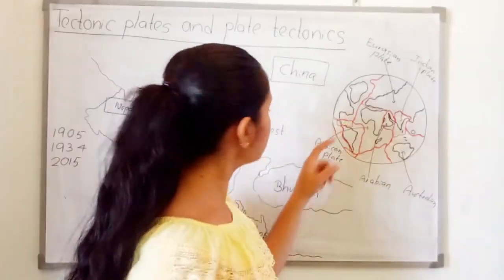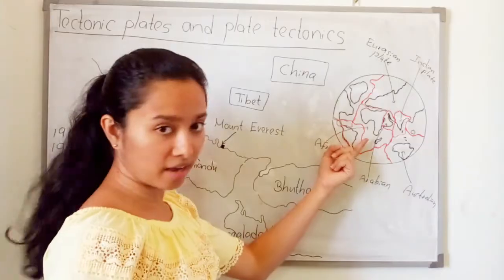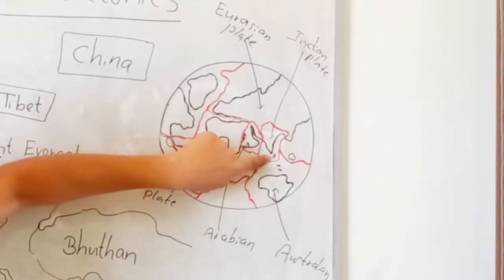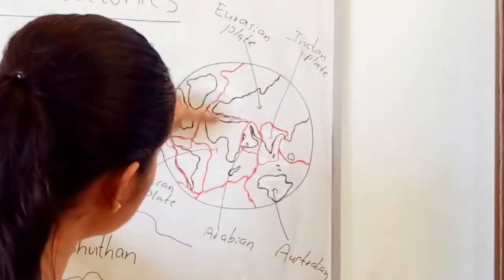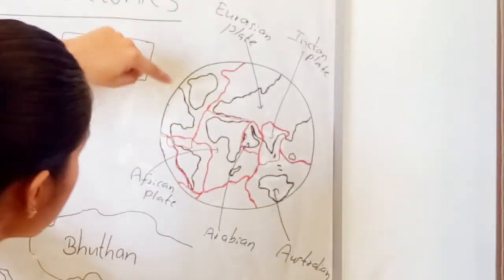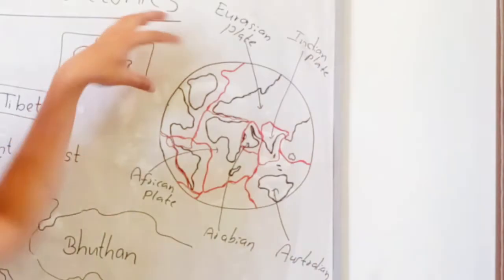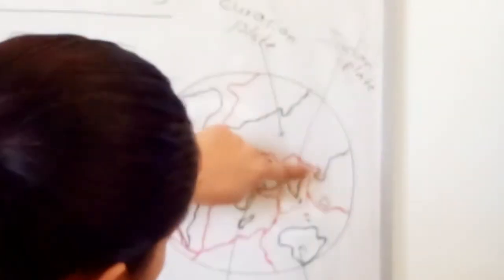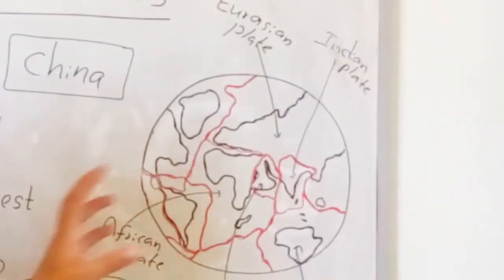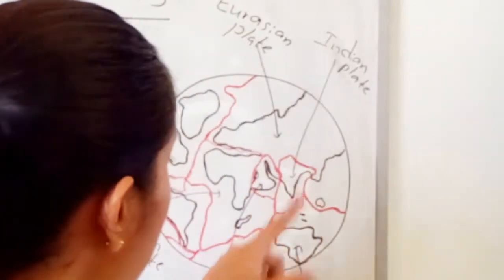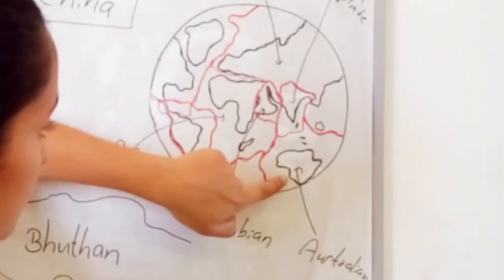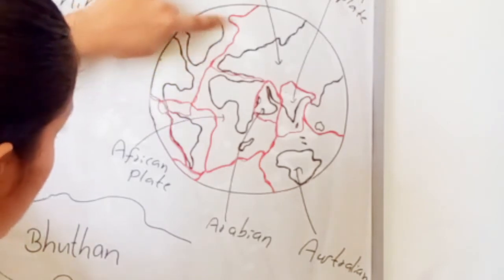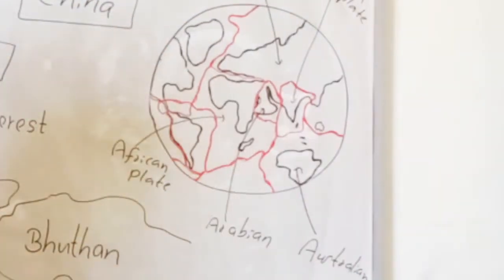When we take one section, we call it one tectonic plate. You can see Russia, India, Sri Lanka, Australia, the Arabian region, and Africa. There is also South America and North America. Sri Lanka is situated in the Indian plate. This is the Arabian plate, the Australian plate, the African plate, and here are the North American and South American plates.